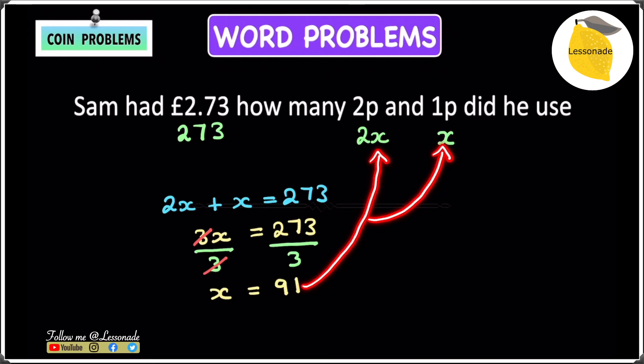To check whether this is right, we have to substitute this 91 into this equation we started with. Which is 2x plus x equals 273.